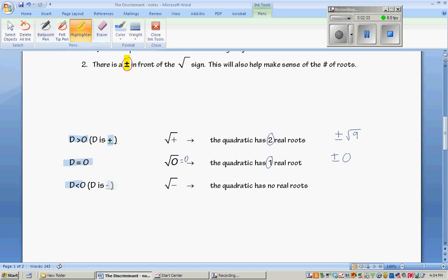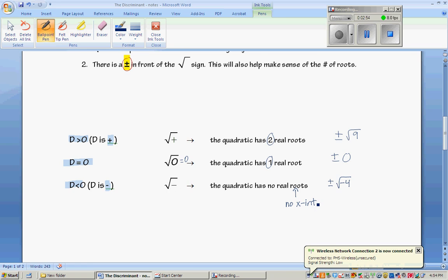Lastly, when D is less than zero, when it is negative, back in Algebra 1 we would say the quadratic has no real roots. Because if you have plus or minus the square root of negative four, we can't actually take that square root and get a real solution. So this means we have no real roots, no x-intercepts.